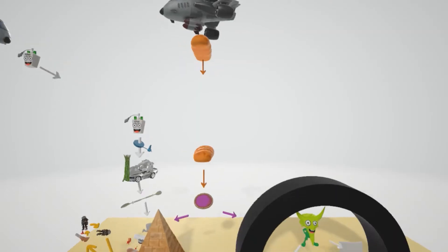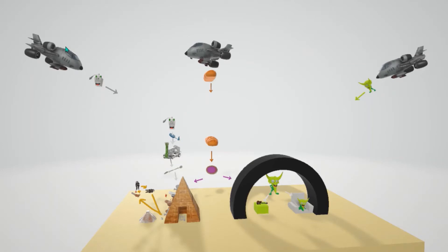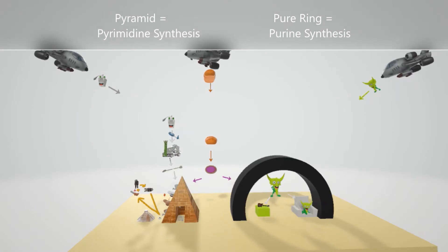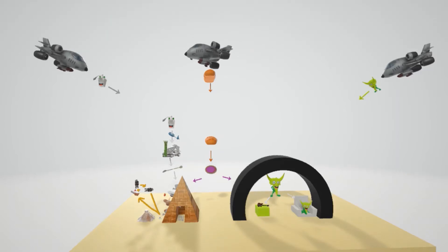Everything on this side of the screen is de novo pyrimidine synthesis; soon we'll discuss purine synthesis on the other side. The pyramid represents pyrimidine synthesis, and the huge pure ring represents purine synthesis. The PRPP, the purple pie, is relevant to both pyrimidine and purine synthesis.